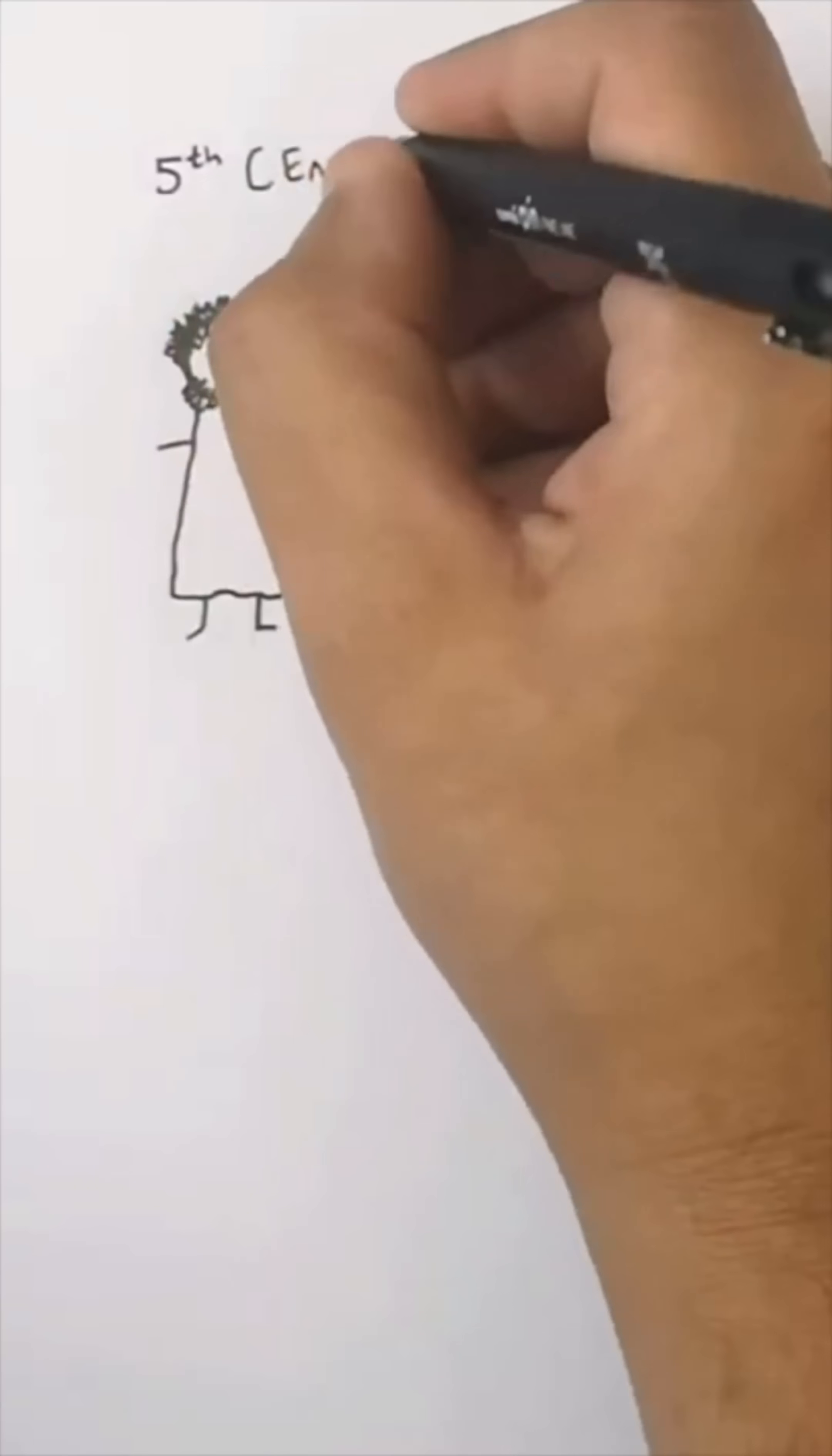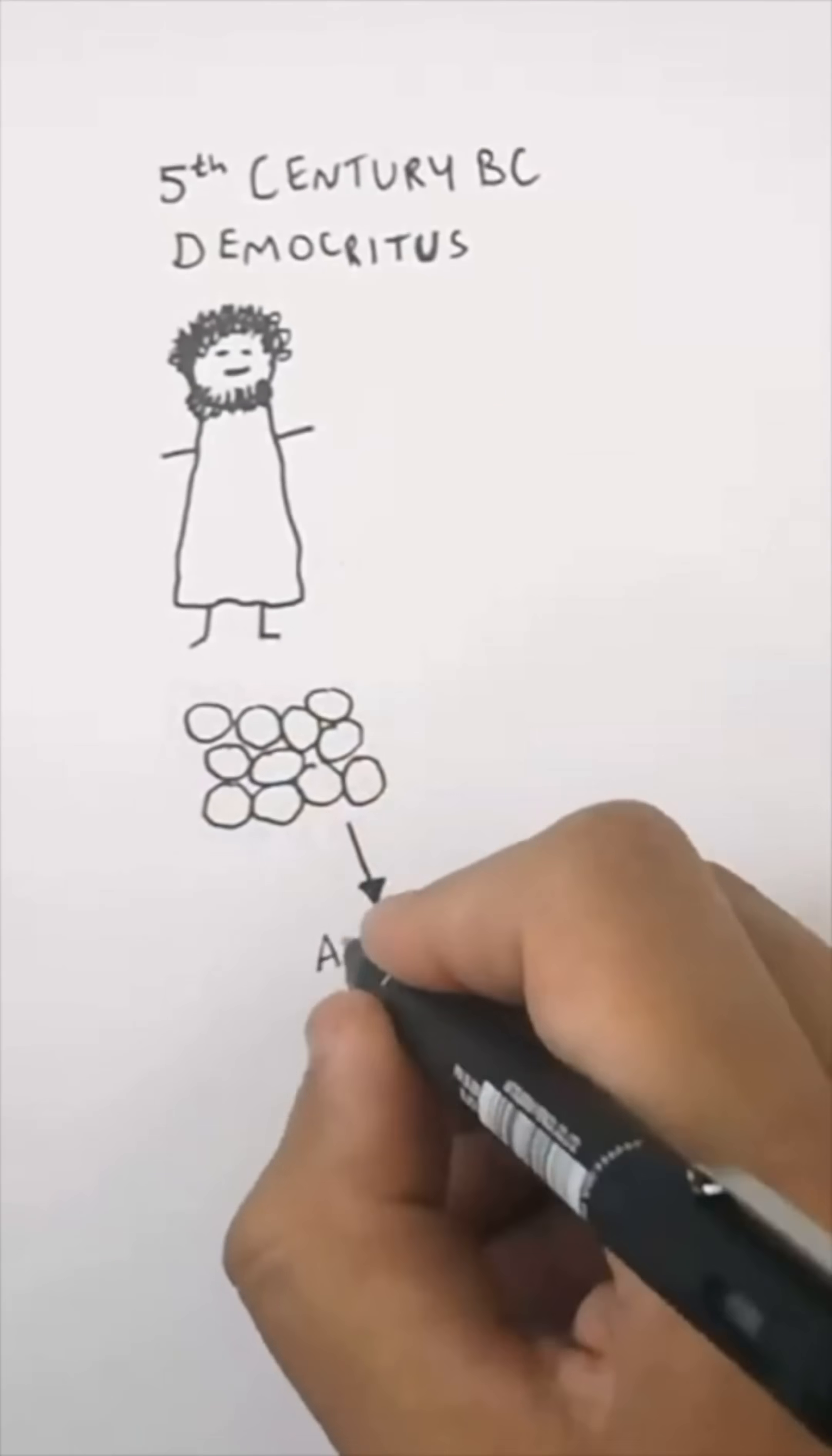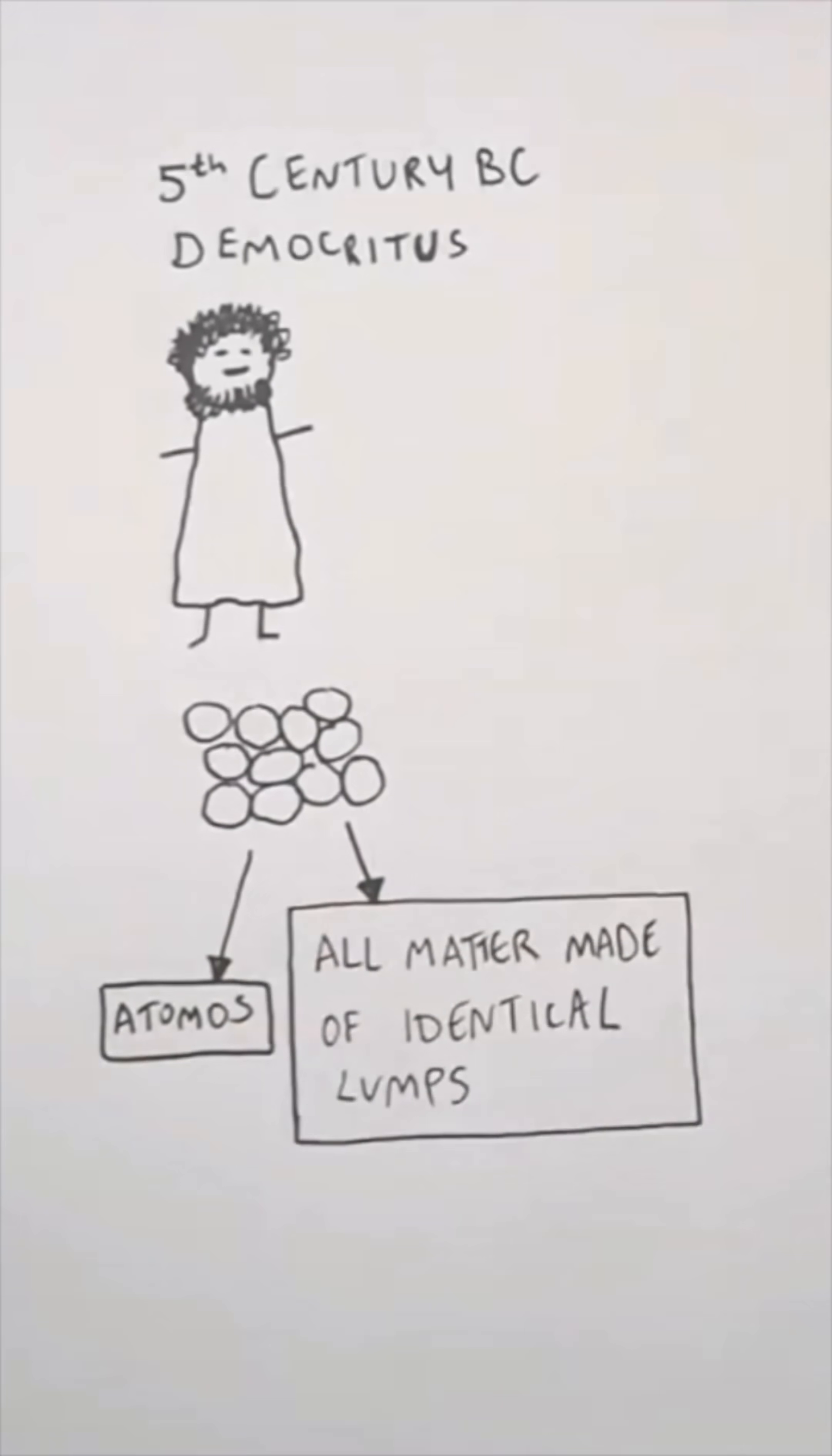The history of the atom. This guy here, Democritus, in the 5th century BC, said there were these things called atomos, that all things were made up of lumps.